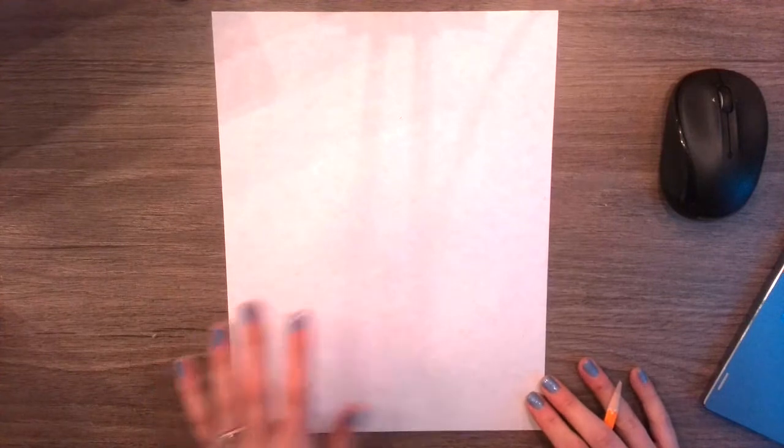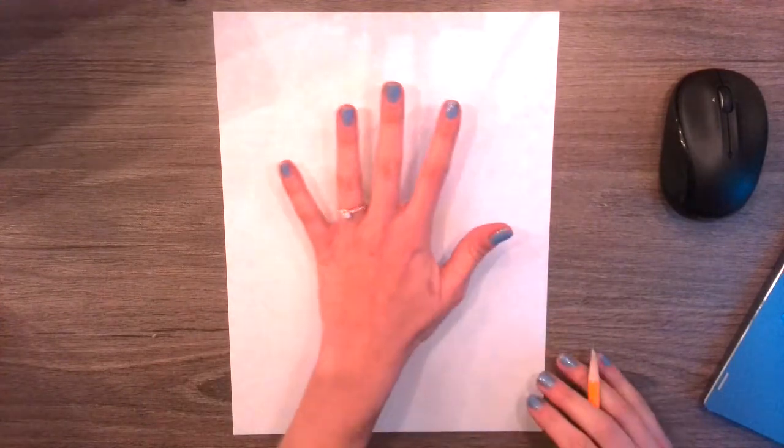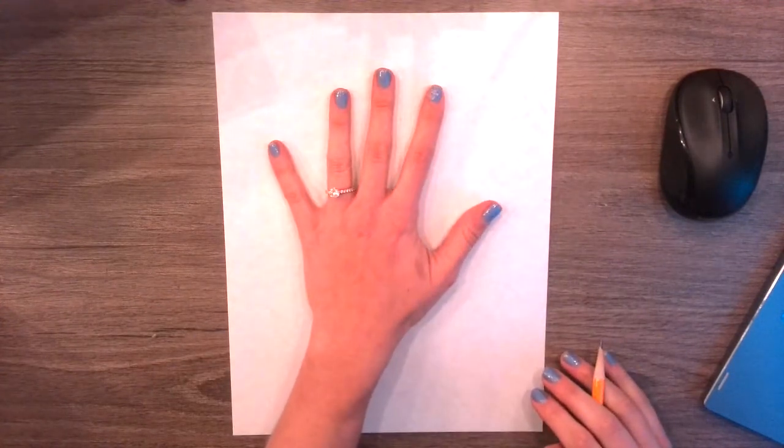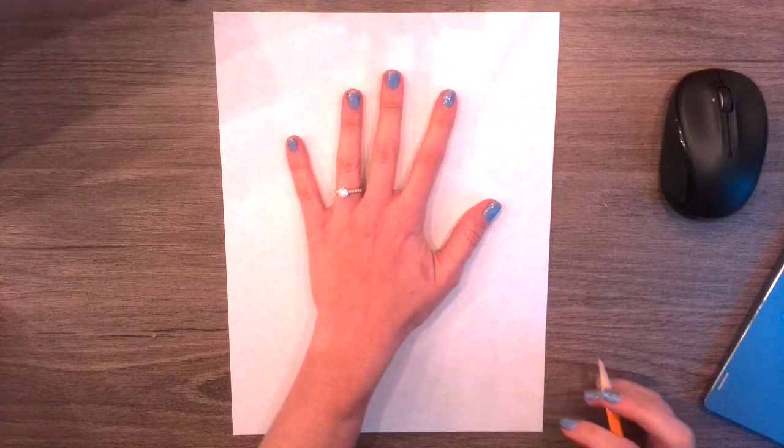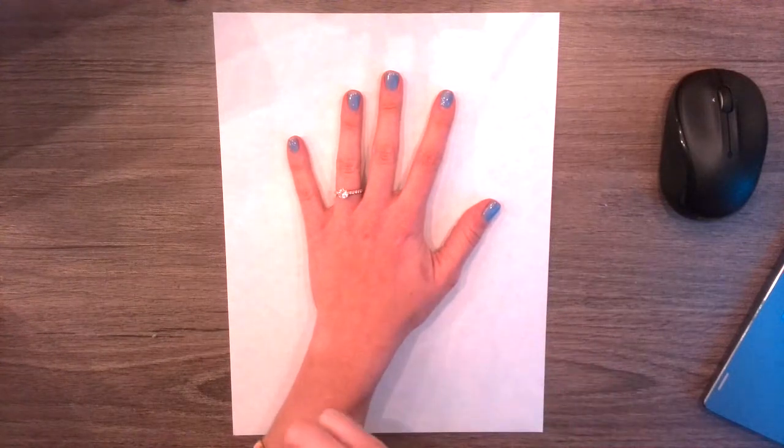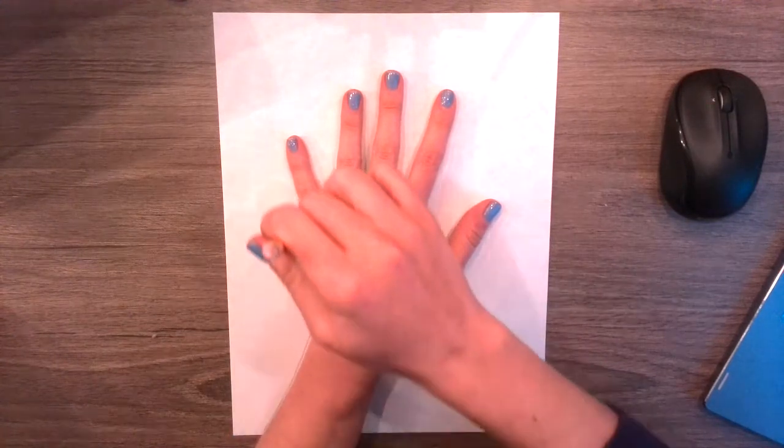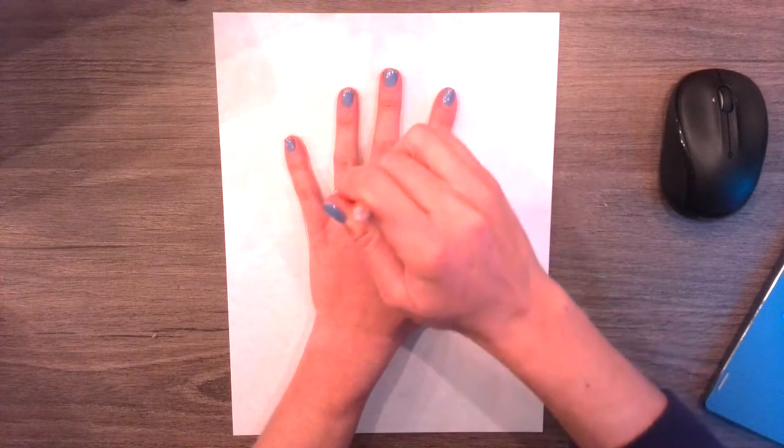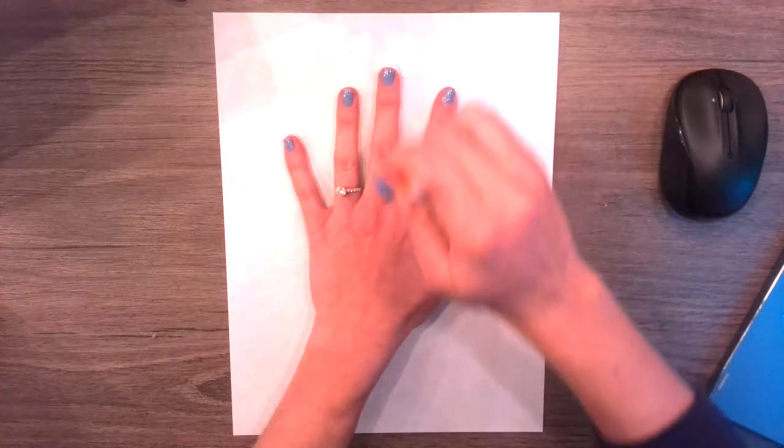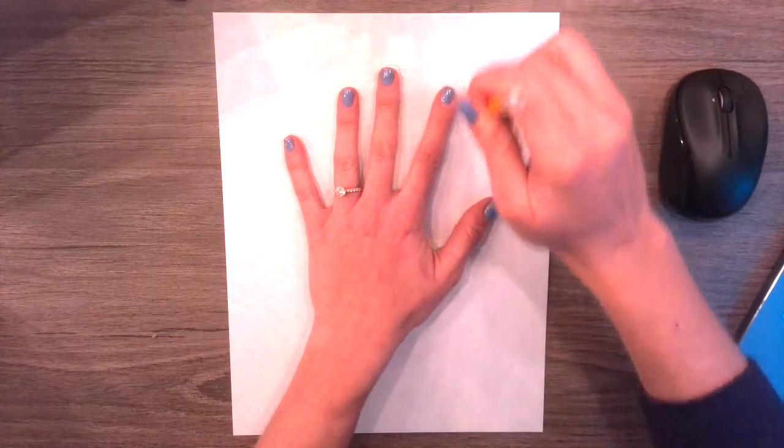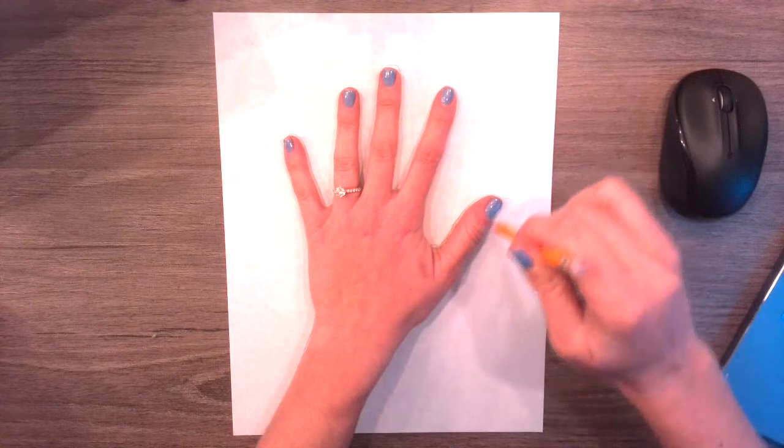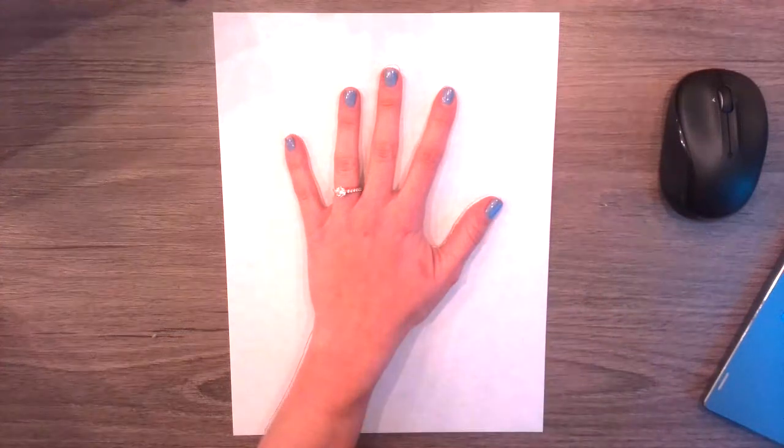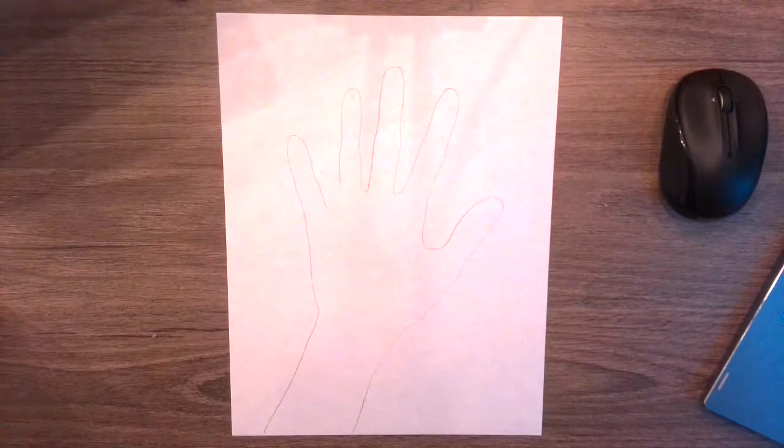So we are going to start by taking our hand, and you can even do part of your arm, and we're going to place it on our piece of paper. And you're going to just trace your hand. So here we go. All right, I traced my hand.